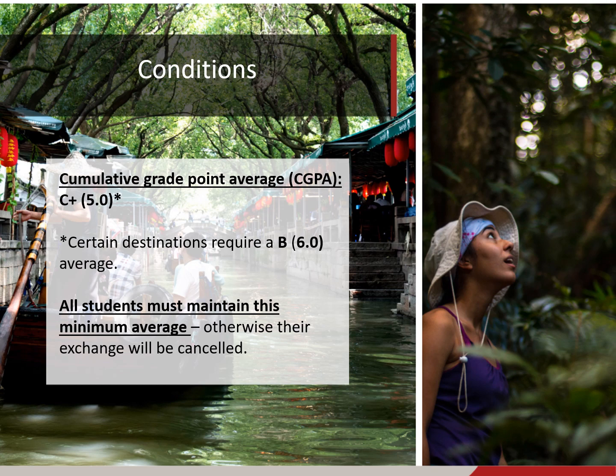In order to be eligible for an exchange, there are certain academic standing requirements that students will need to meet. You must be in good academic standing and not on probation. Students applying for the regular exchange program must have a minimum CGPA of C+ or 5.0. However, certain destinations require a minimum CGPA of B or 6.0. It is important to check the university's profile in our search portal to find out the required CGPA — we will show you how to find that information later in this session. The required minimum average must be maintained until departure, otherwise the exchange abroad will be cancelled.